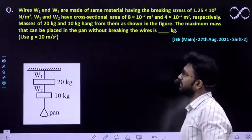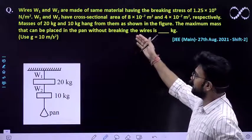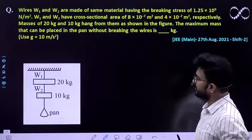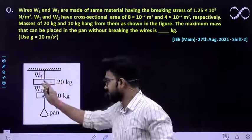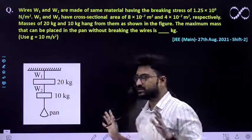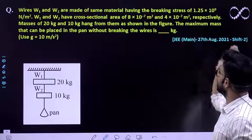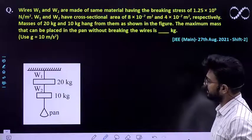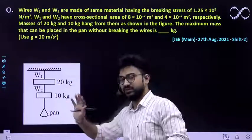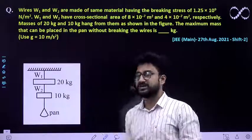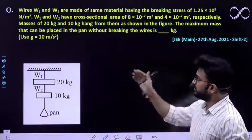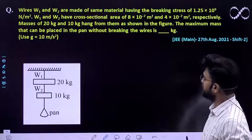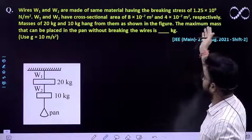Question says wires W1 and W2 are made up of same material. The material of these wires is similar, having the breaking strength of 1.25 into 10 raised to the power 9 Newton per meter square. Breaking strength is force per unit area. W1 and W2 have cross sectional areas of 8 into 10^-7 m² and 4 into 10^-7 m² respectively.